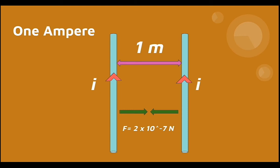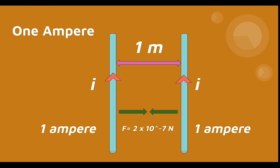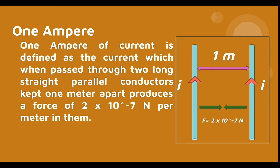So the standard definition of one ampere is: one ampere of current is defined as the current which, when passed through...